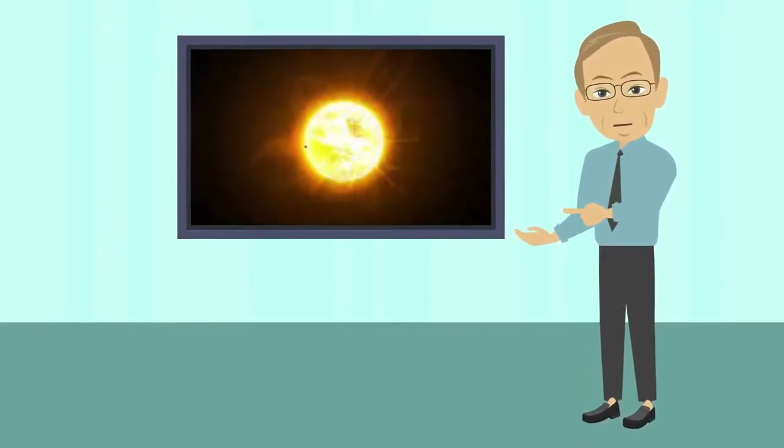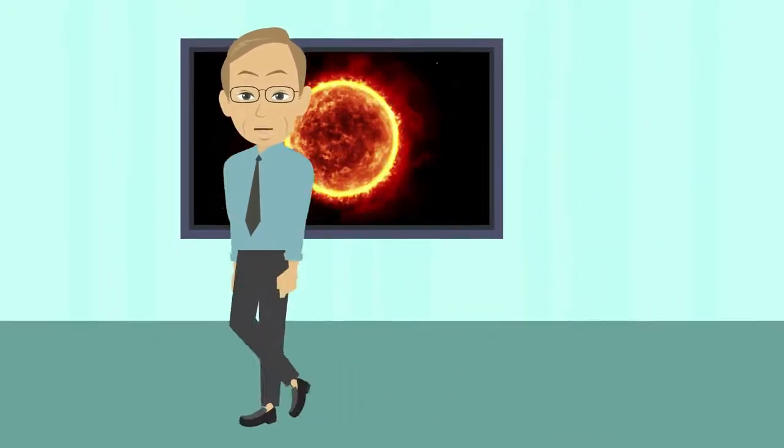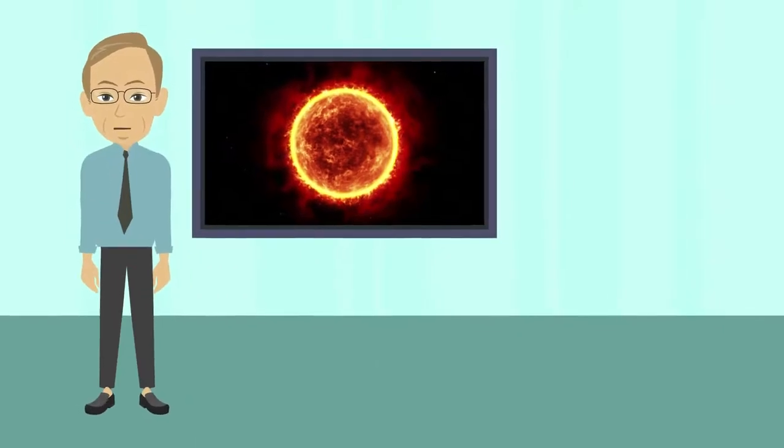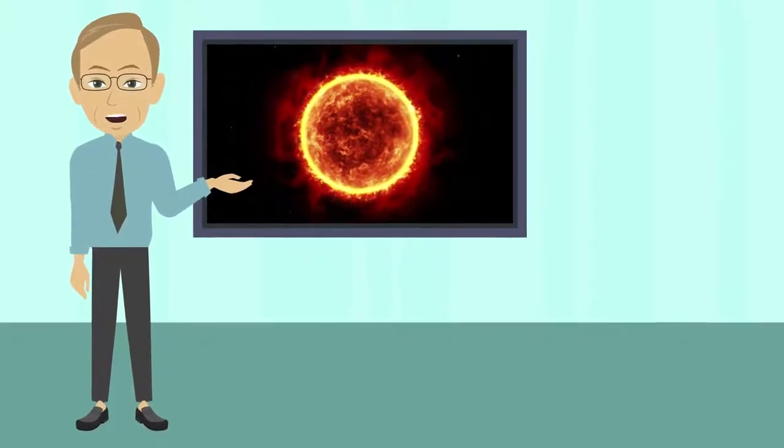Sadly, the energy also causes the Sun to bloat into a red giant. Red giants are red due to their surface temperatures being lower than stars like the Sun. In spite of this, red giants are considerably larger than their hotter counterparts.